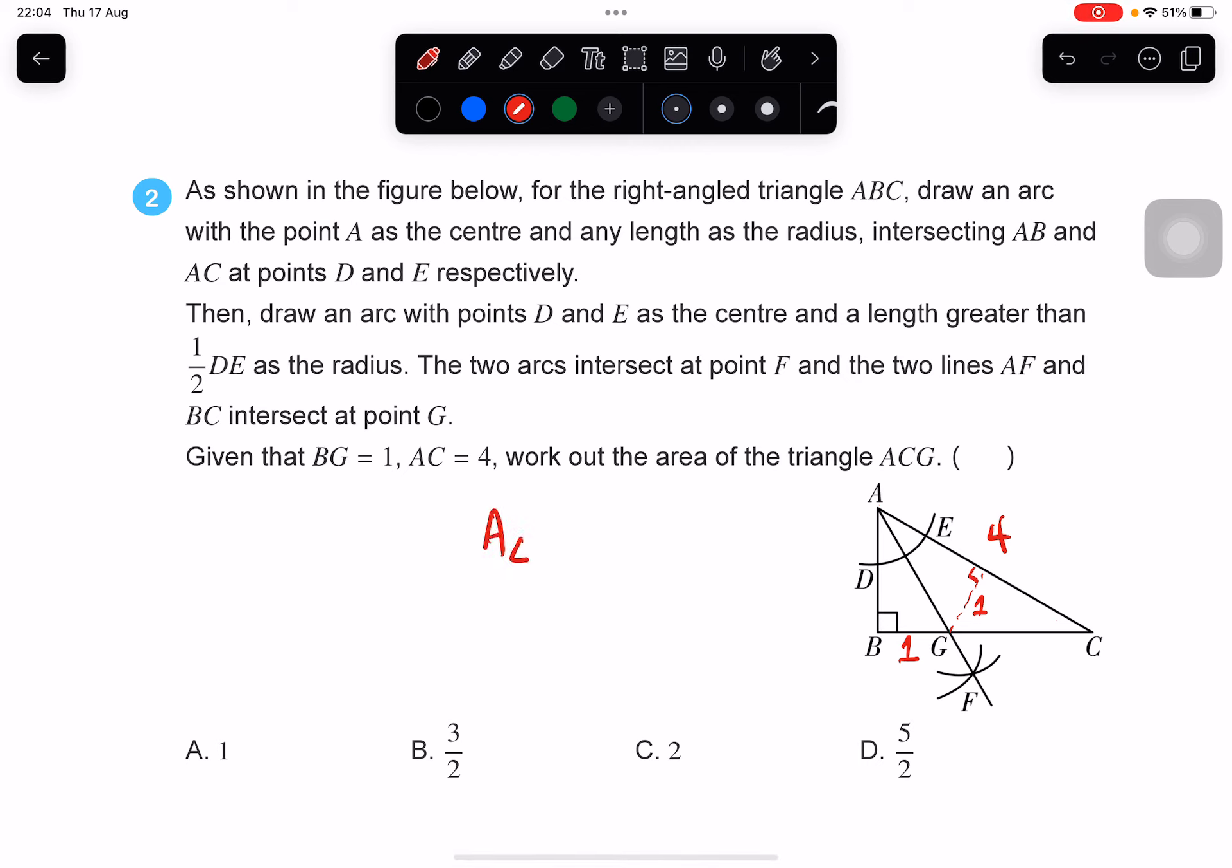So the area of triangle ACG is equal to the base 4 times the height 1 divided by 2. That's going to be 2. So the answer is C right there.